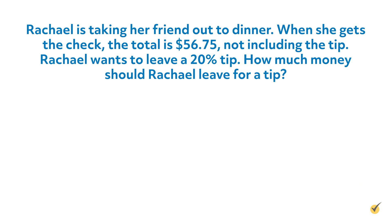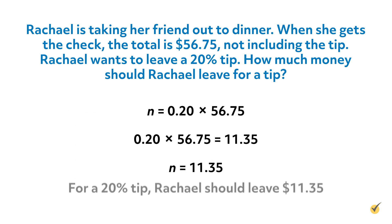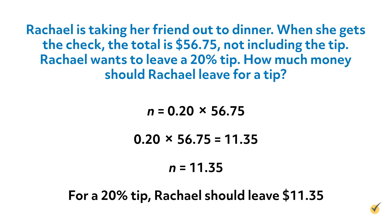Now that you've tried this one on your own, let's take a look at it together. To answer this question, we need to figure out what number is equal to 20% of $56.75. The algebraic equation is n equals 0.20 times 56.75. 0.20 times 56.75 equals 11.35, so n equals 11.35. Therefore, for a 20% tip, Rachel should leave $11.35. Great job!